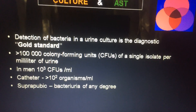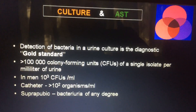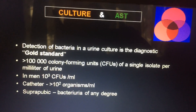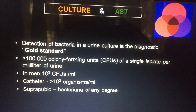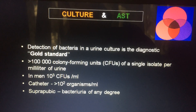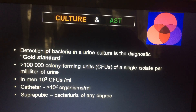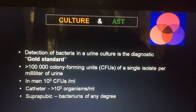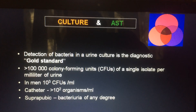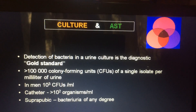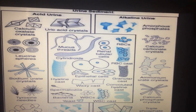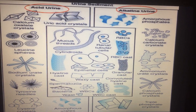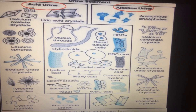For detection of bacteria by culture, growth of microorganisms more than 10⁵ is considered positive. In men, 10³ is considered positive. In a catheter sample, 10² colonies is considered positive, and even in a suprapubic collection, 10² is considered positive. This final slide again shows, in acidic and alkaline urine, the different types of material — mainly crystals — that you can detect.